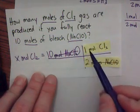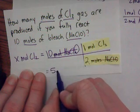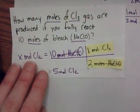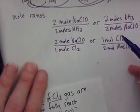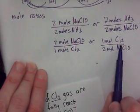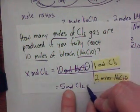So I would do ten times one divided by two and end up with five moles of chlorine gas. That should make sense because we realized it was a one to two ratio. For every two moles of bleach we react, we get one mole of chlorine gas. If I react ten moles of bleach, I should get half that as chlorine gas.